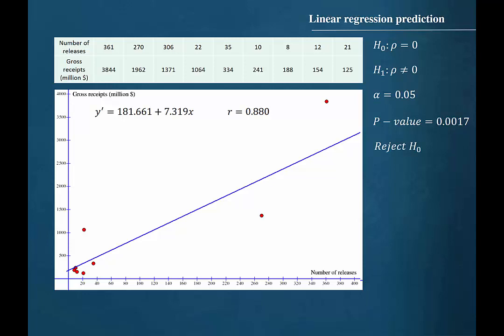Since the p-value is less than alpha, we should reject the null hypothesis. Since we are rejecting the null hypothesis, we will conclude that the value of r is significant. As long as the rest of the guidelines are met, we may use the model to make predictions about gross receipts.